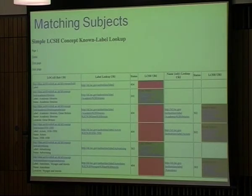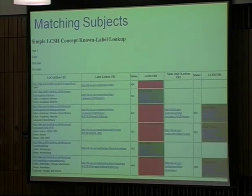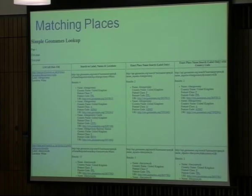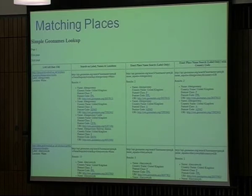Some challenges. Matching things — matching subjects. Our stuff is in the left column, and all we tend to have is what you can see there in the label, like 'academic libraries.' When we're trying to match up to the Library of Congress subject headings, it can be quite tricky, and this whole area of matching things can be a tough one. Similarly with places — for example, Abergavenny in Wales. If we try to match that against Geonames, we're getting four matches immediately on the very first one. So it's quite a headache.